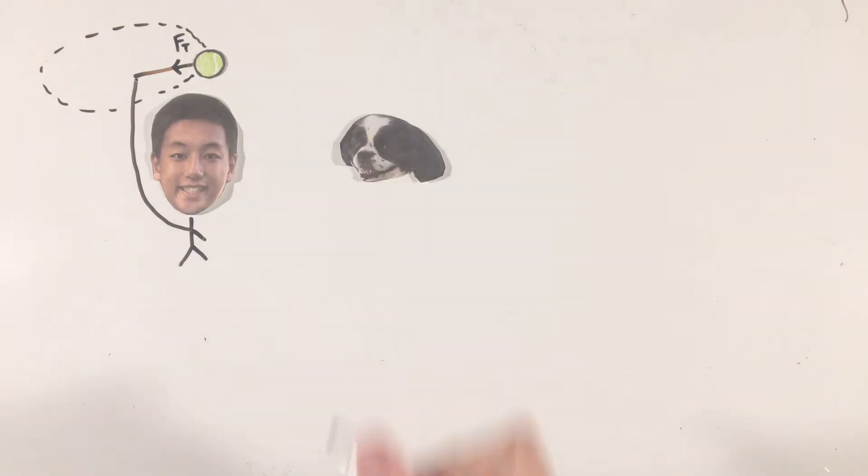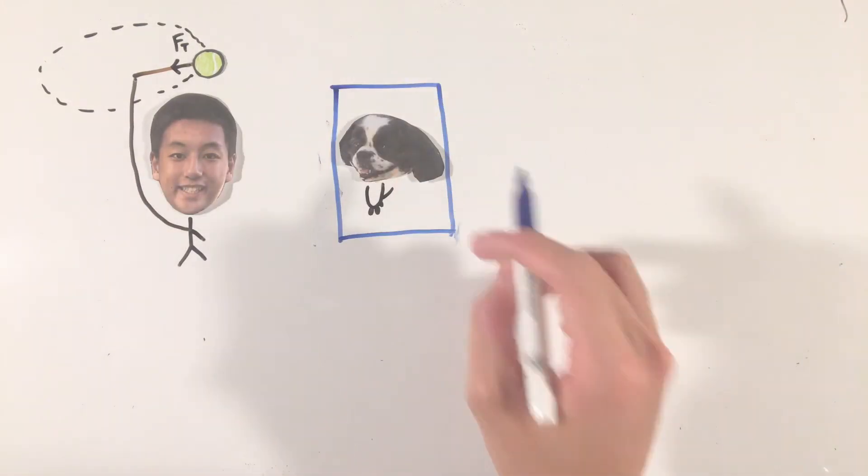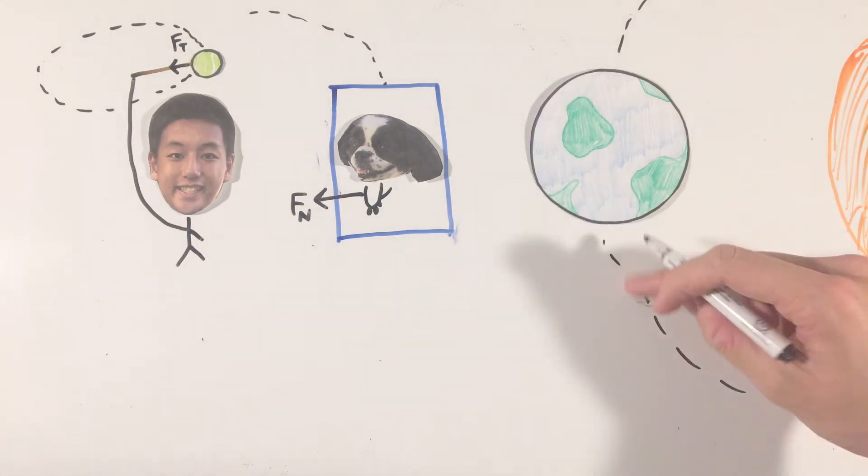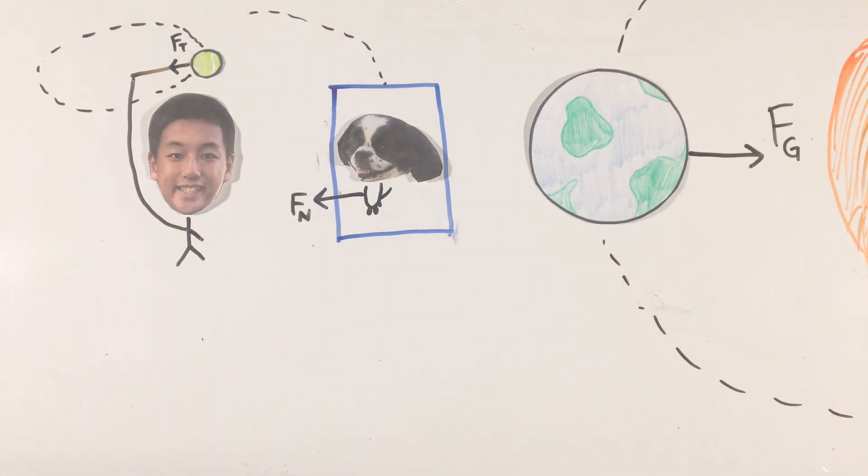The tension in a string when you swing a ball above your head, the normal force of the car walls when you make a turn, or the force of gravity on Earth as it orbits the sun. In essence, objects don't apply centripetal forces, but rather some other force, be it tension, normal force, or gravity, must provide or act as the centripetal force for objects to move in circles.